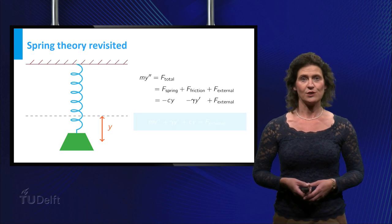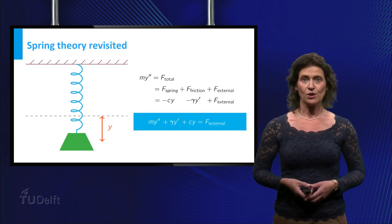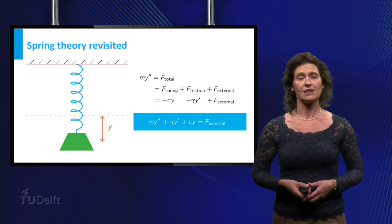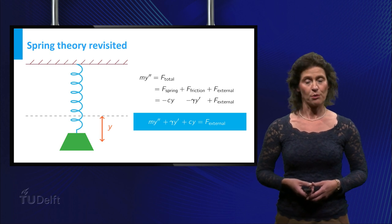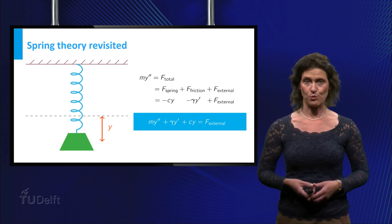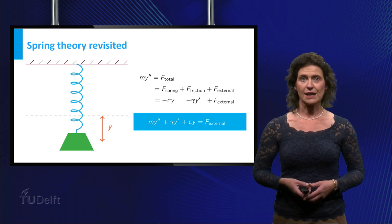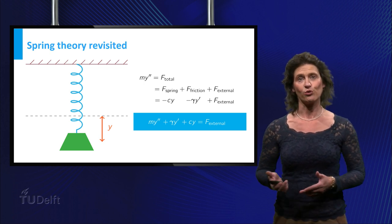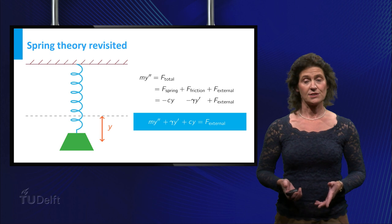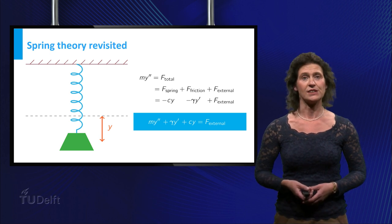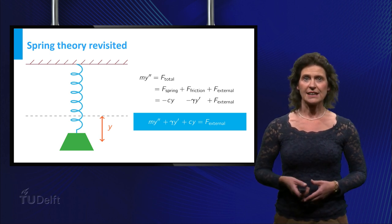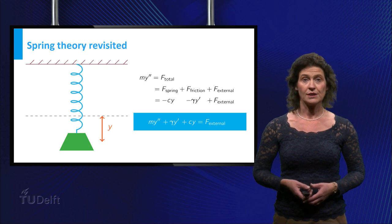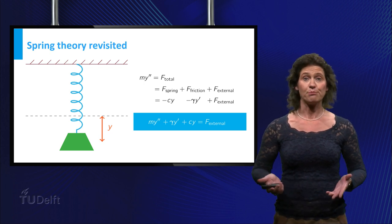Putting this into a more standard form, you recognize the equation m times y double prime plus gamma times y prime plus c times y equals the external force. This is a second-order differential equation, but with a right-hand side not equal to zero. It is some function independent of y.